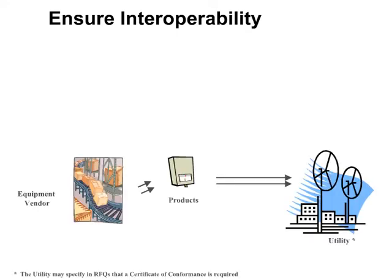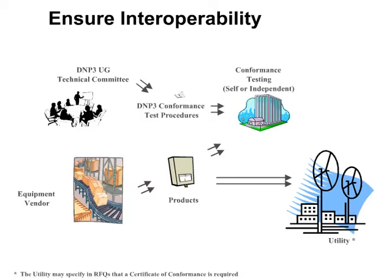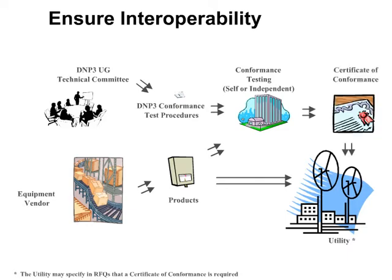As with any protocol, equipment vendors develop products with the goal of selling them to utilities and other customers. With D&P3, the technical committee clarifies the specification and develops conformance test procedures. The end-user utility may specify in its request for quotes or proposals that the supplied equipment must have successfully completed the conformance test procedures.